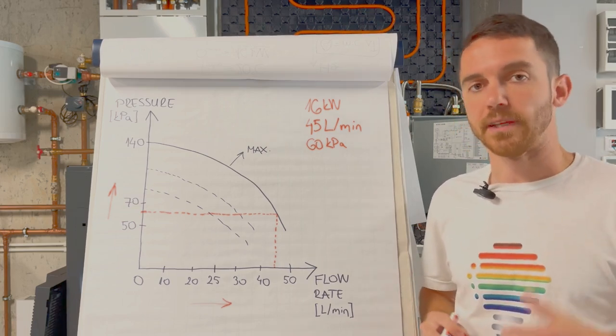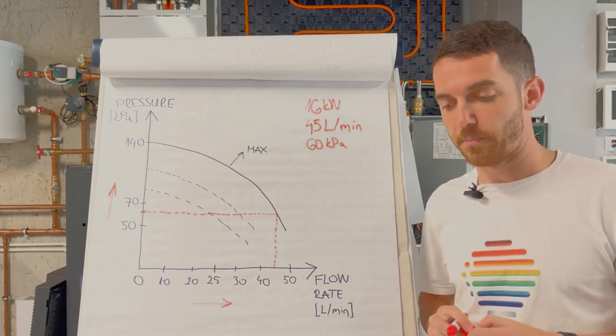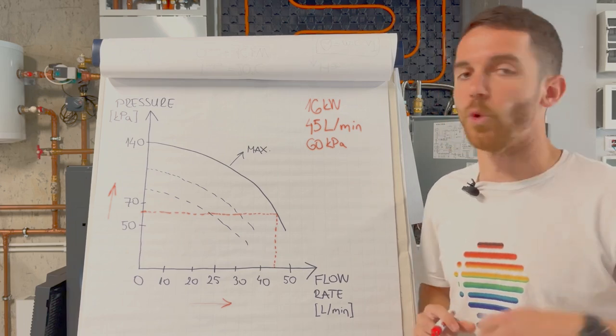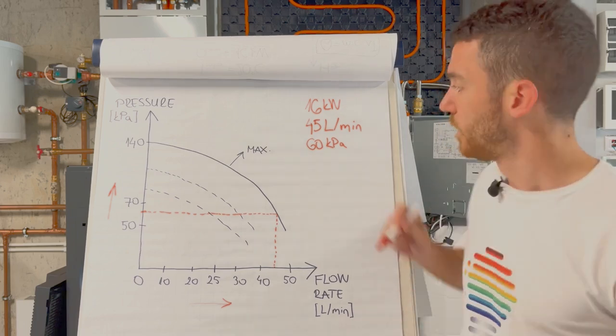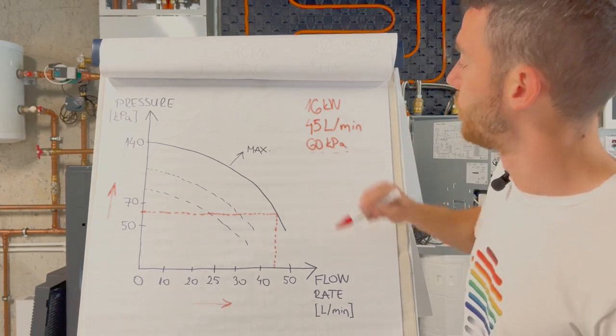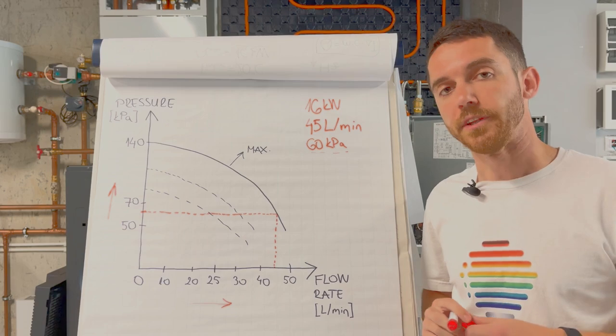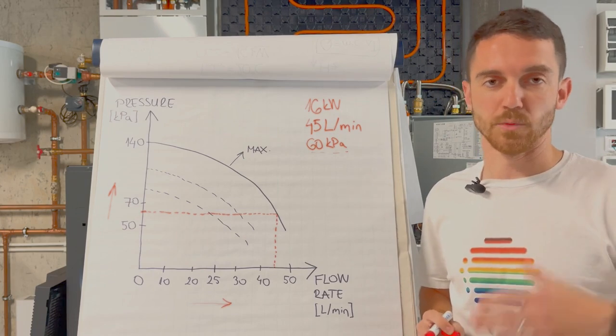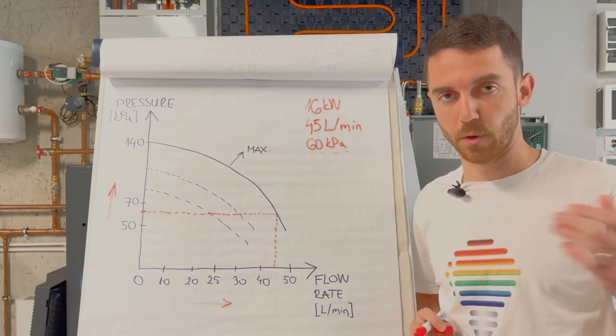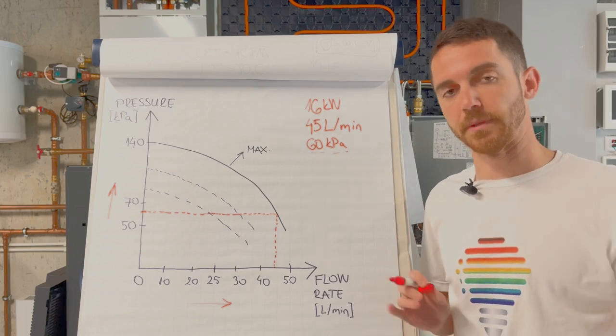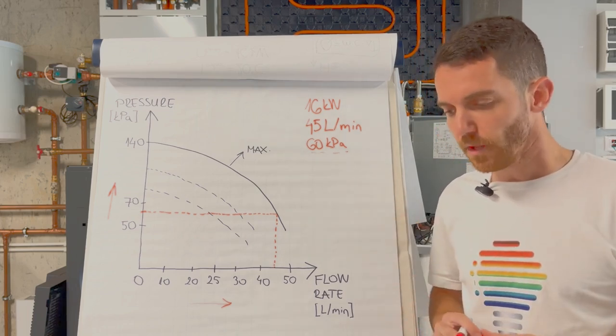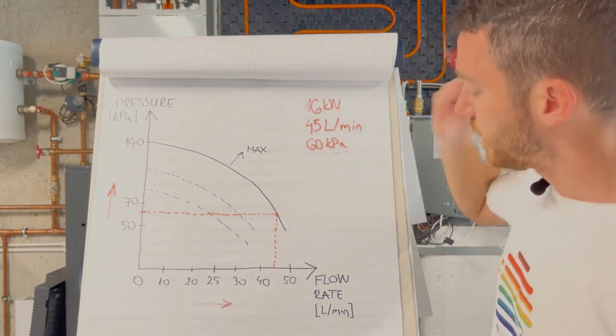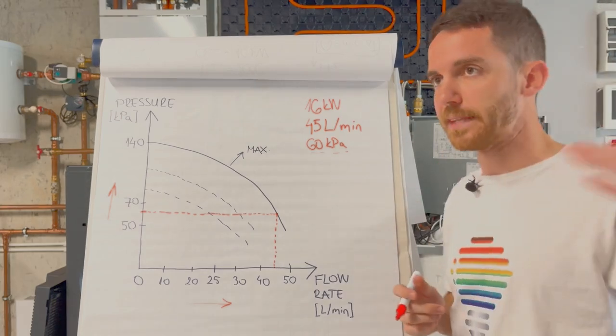I showed you in previous videos, normal underfloor heating installation with good design primary pipe, it's not more than 30 kilopascal, 40 probably on the top. But 60 you will probably not have in your installation. For radiators it's the same, only if it's really old with microbore, with 8 millimeters and 10 millimeters pipes. But let's focus on more than 90 percent of installation.